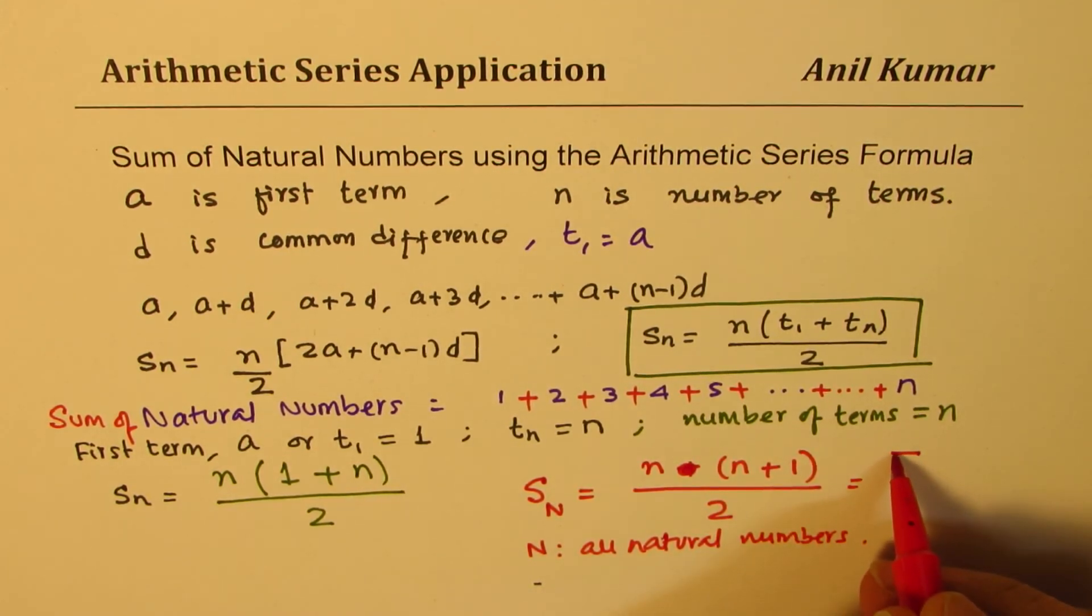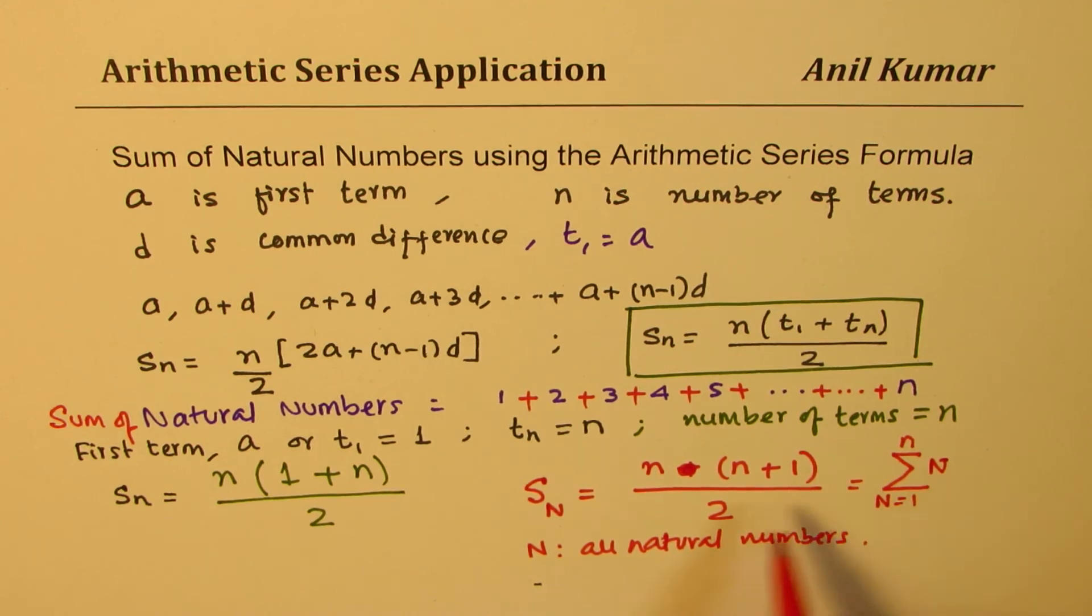So at times, we also write this sum in summation notation, where we are saying this capital N moves from 1 to n. So that is the sum of natural numbers. Sum of all natural numbers from 1 to n will be this particular formula. So that is how you could derive a formula. I hope it makes sense.